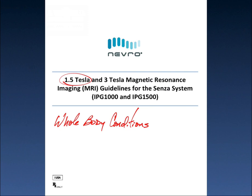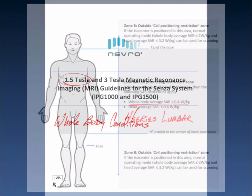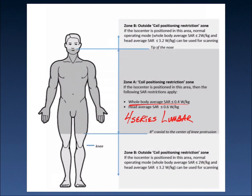We're going to follow the whole body conditions for a 1.5 Tesla system. In the conditions of use for the NEVRO spinal cord stimulation SENZA system, the SAR values depend on what area of the body over which you will center or landmark. We're going to use Zone A. In this particular zone, if the isocenter is positioned in this area, then we're going to limit the whole body average SAR to 0.4 watts per kilogram.